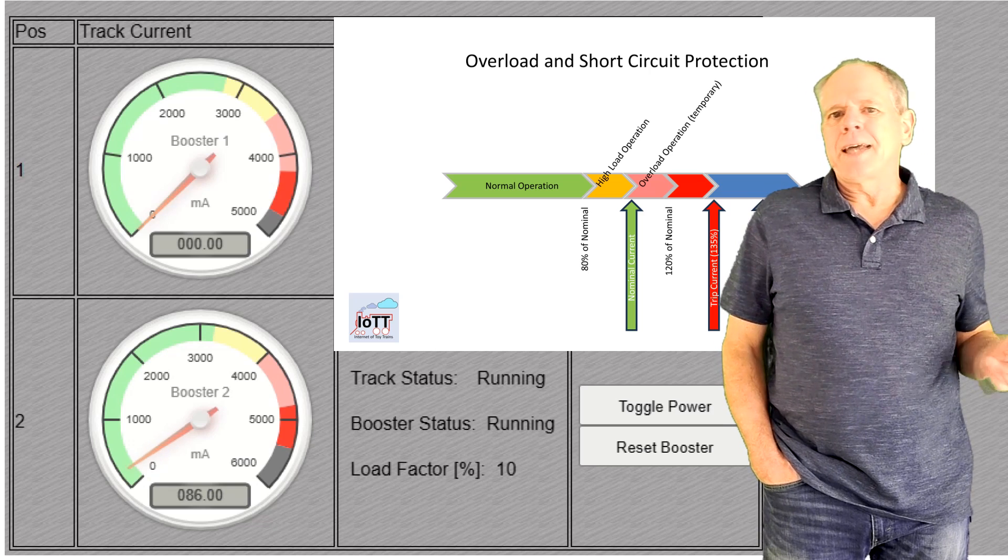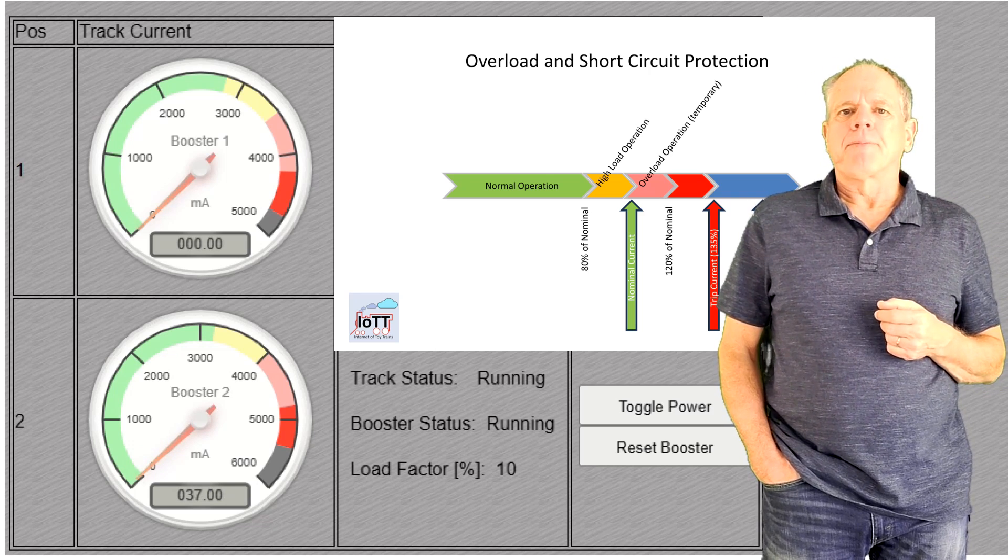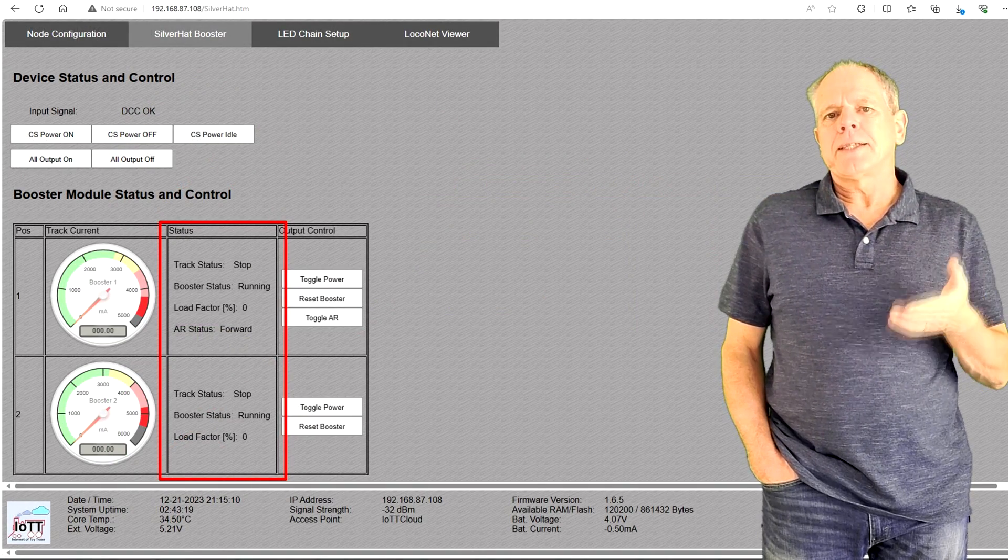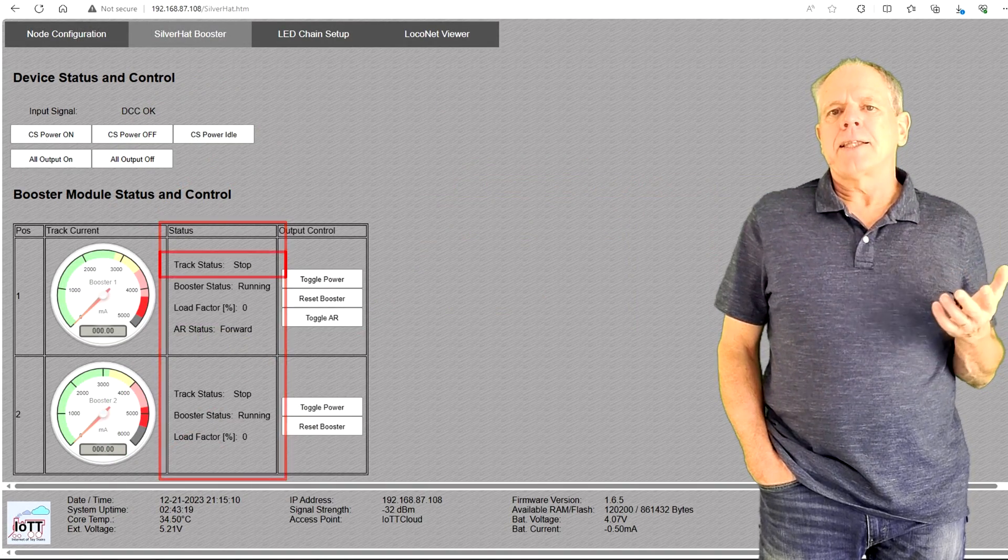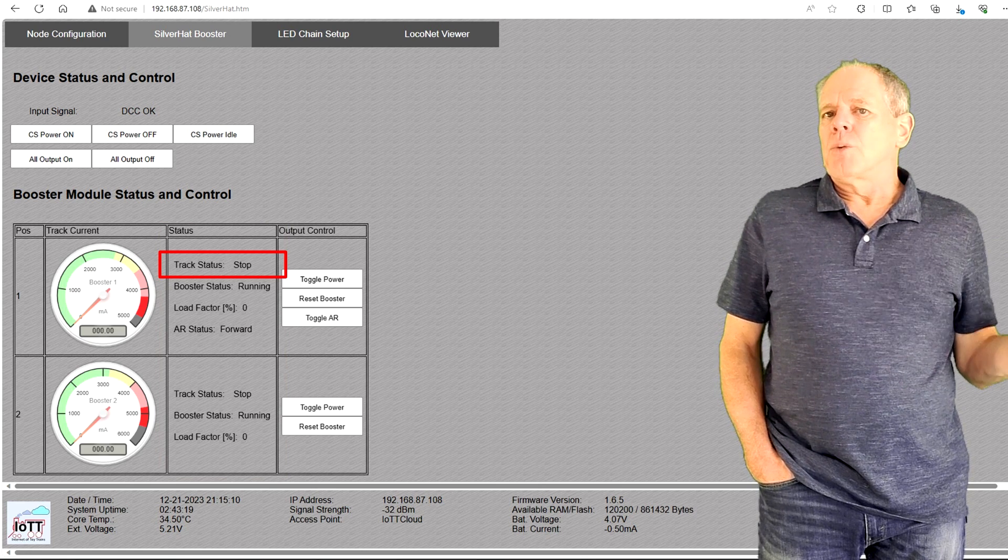The needle, of course, displays the actual track current, which is also shown in the numeric display. The booster status is also shown in the status section. The track status indicates what the output is supposed to be, either stop or running.